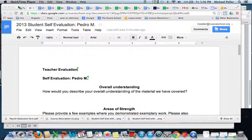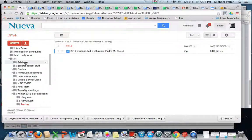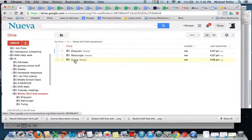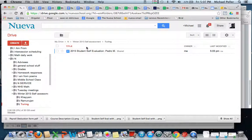Anyway, here's the idea. In your Google Drive, you'd have some folder. I just named it Winter Self-Assessment. And you'd have a section, folders for each section.